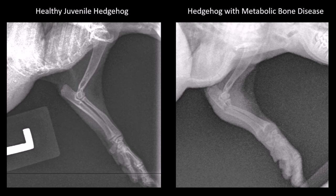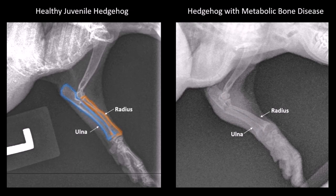In the abnormal leg on the right hand side of the screen, it's easy to see that there are fractures near to the elbow in both the radius and the ulna. Also, the normal radius and ulna have much wider edges or cortices, like tram lines running down the edges of the bone. On the abnormal leg you can't see that, because the amount of calcium in the bone in the abnormal leg is less.